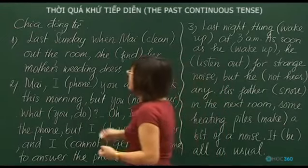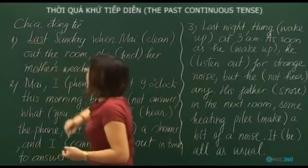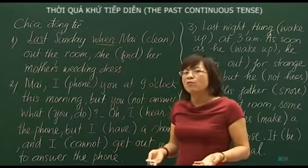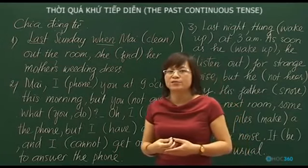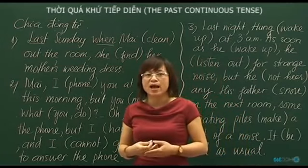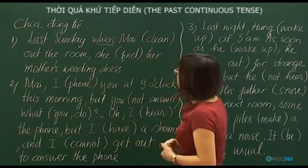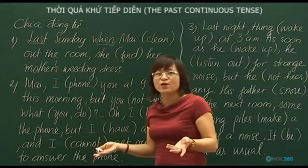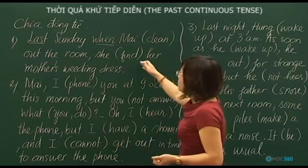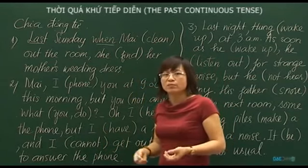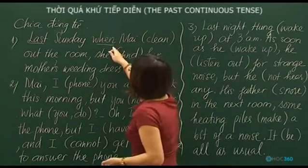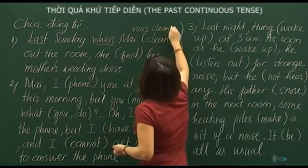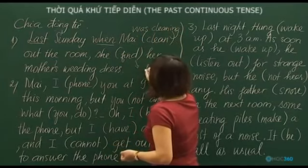Sentence 1: 'Last Sunday' — we think of past tense. There is also 'when', so remember: the long action uses past continuous, the short action uses simple past. Here, cleaning the room takes a long time, so it is past continuous. Finding something is a short action. So: 'When my [sister] was cleaning, she found [something].'